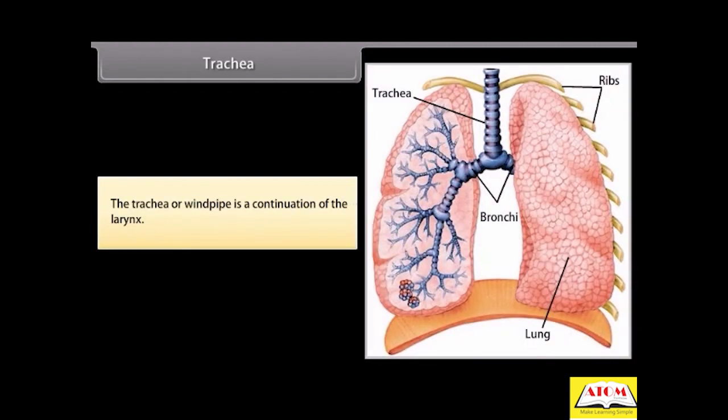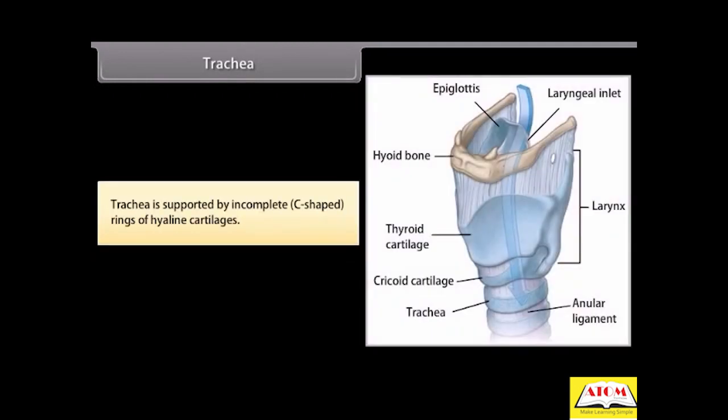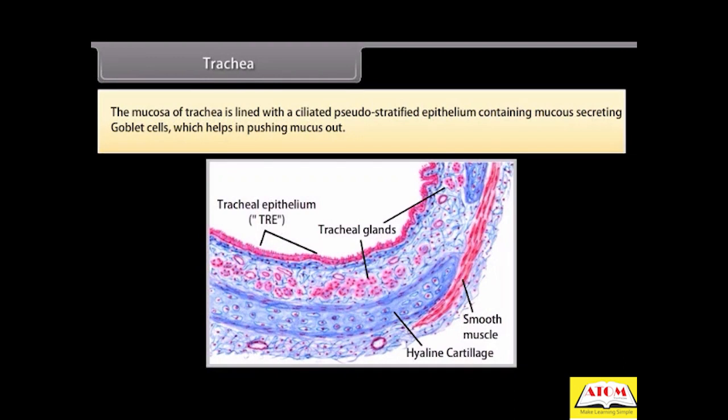Trachea. The trachea or windpipe is a continuation of the larynx. Trachea is supported by incomplete C-shaped rings of hyaline cartilages. The mucosa of trachea is lined with a ciliated pseudostratified epithelium containing mucus-secreting goblet cells, which helps in pushing mucus out.